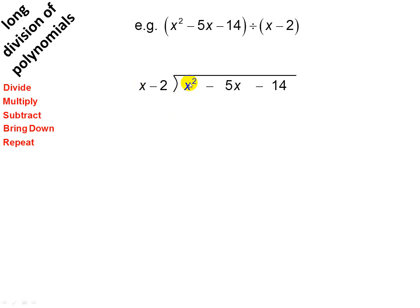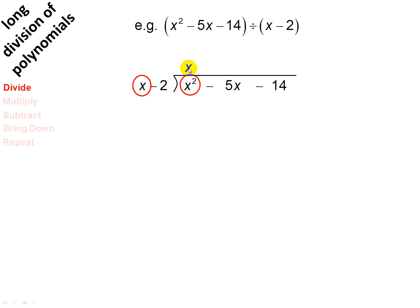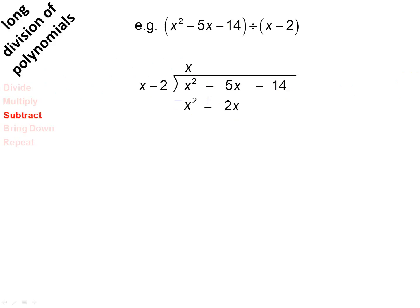x into x squared gives you x. Next step, we're going to multiply — so we take x and multiply x minus 2, and we end up with x squared minus 2x. Now we're going to subtract. Remember, we change the sign on the bottom line and then we add. x squared and negative x squared cancel; minus 5x plus 2x gives minus 3x.